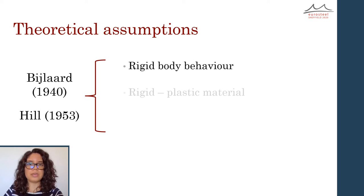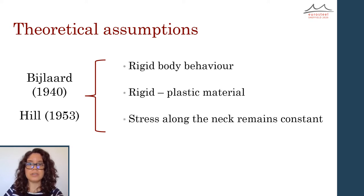To develop the theory, both Bridgman and Hill considered that each side of the neck moves like a rigid body relatively to the other. They also used an isotropic material with rigid plastic behavior and assumed that the stress along the neck remained constant.